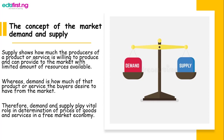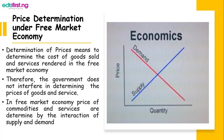Price determination under free market economy — how is price determined in a free market economy? In a free market economy, the government does not have any interference; the government does not determine the quantity or the pricing system. Determination of price means determining the cost of goods sold and services rendered. In a free market economy, prices of commodities and services are determined by the interaction, or the forces, of demand and supply, as you can see in the graph.